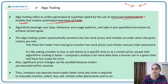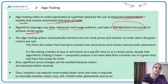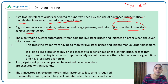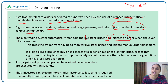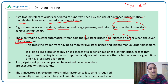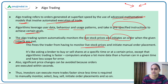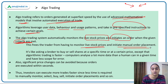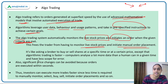Algorithms use user data, behavior patterns, and pre-specified instructions to achieve certain goals. The algorithmic trading system automatically monitors live stock prices and initiates orders when the given criteria are met. This frees the trader from having to monitor live stock prices and place manual orders. Significant price changes can be avoided because orders can be executed within seconds — one of the major benefits of algo trading.